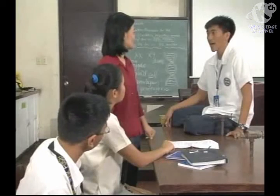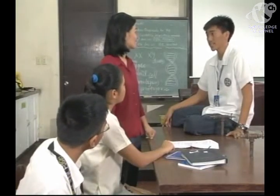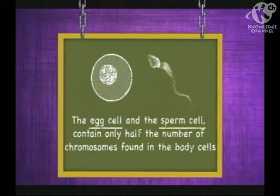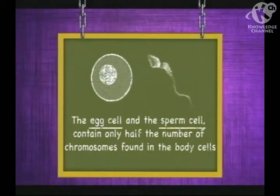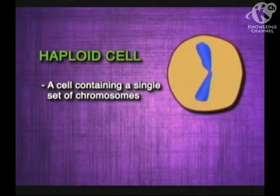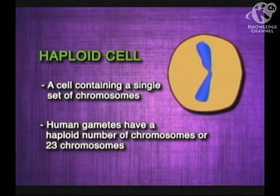Ma'am, how many chromosomes are found in human sex cells? The human sex cells, which are the egg cells and the sperm cells, contain only half the number of chromosomes found in the body cells. A cell containing a single set of chromosomes is called a haploid cell. Human gametes have a haploid number of chromosomes, or 23 chromosomes.